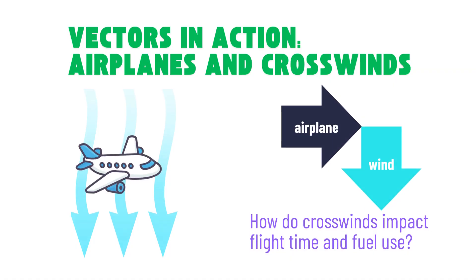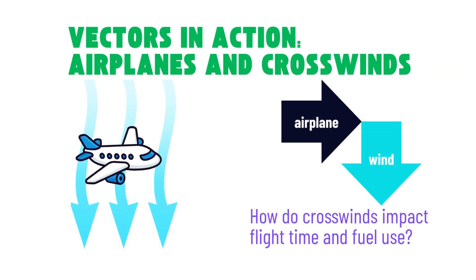Finally, let's look at one more situation. The plane is flying forward, but this time a strong wind, called a crosswind, is blowing from the side, perpendicular to its motion. Can you figure out how this crosswind will affect the plane's actual path, travel time, and fuel use?